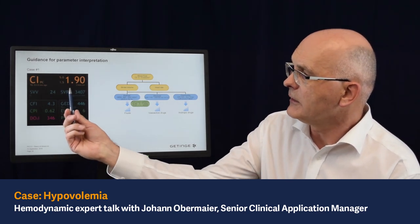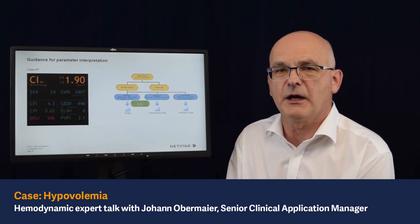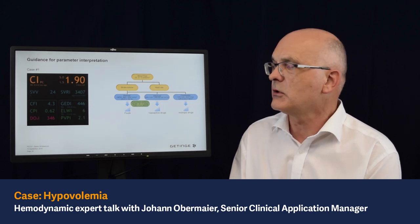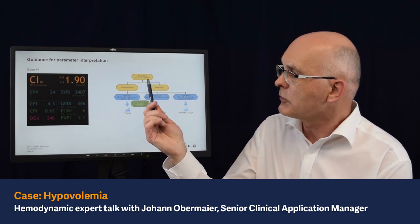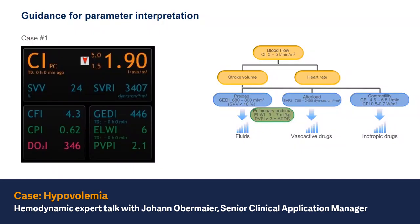In this example, we see a cardiac index of 1.9, relative to the normal range of 3 to 5 — that's pretty low. So we have a situation of reduced blood flow, and now we have to check why.